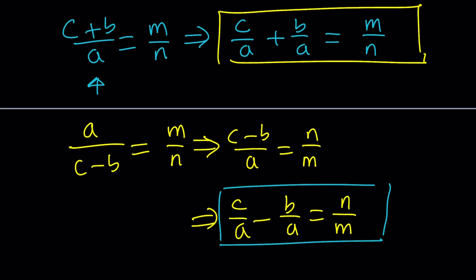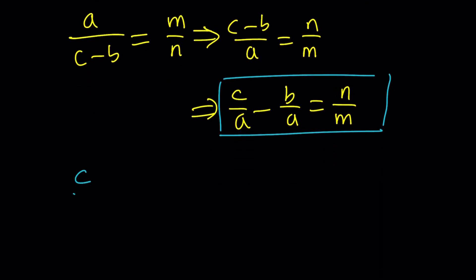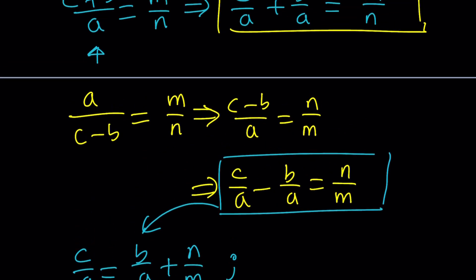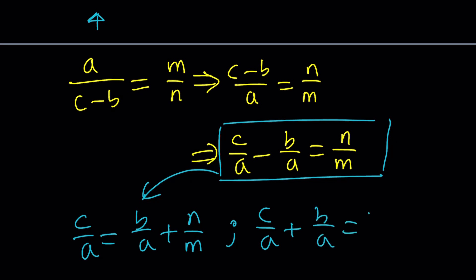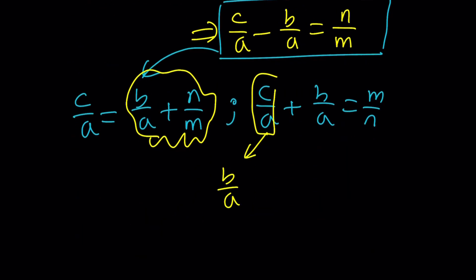We can actually take the second one and isolate c over a, like add b over a to both sides. It's going to be b over a plus n over m. Then we can use the first equation. In the first equation, we have c over a plus b over a equals m over n. Notice that we can replace the c over a here with this. This is substitution, but you could also use elimination. But I like the substitution better. Because with elimination, when you add these two things, you're going to get two times the fraction. Then you'll have to divide by two.